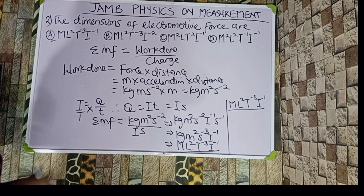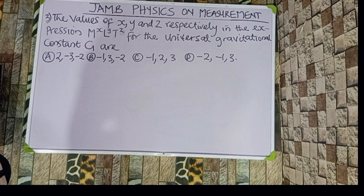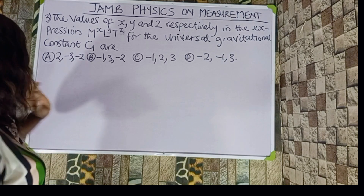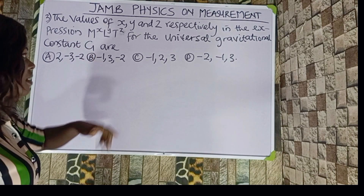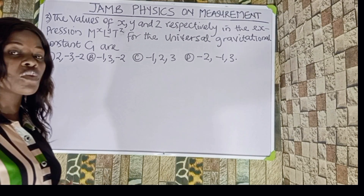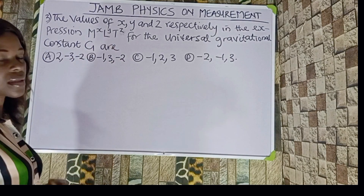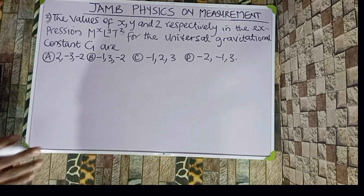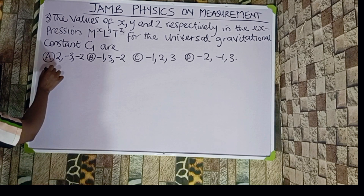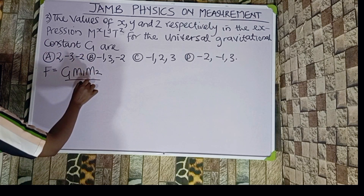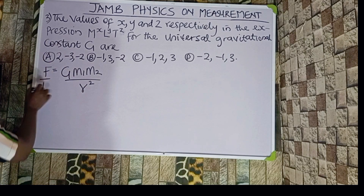The values of x, y, and z in the expression MˣLʸTᶻ for the universal gravitational constant G — we need to find the dimension of G. The first thing we do is look at the relationship connecting G and force. We know that F equals G·m₁·m₂ over r².